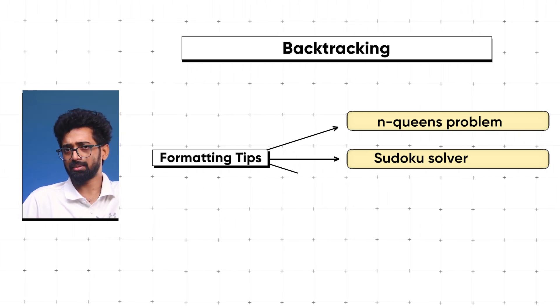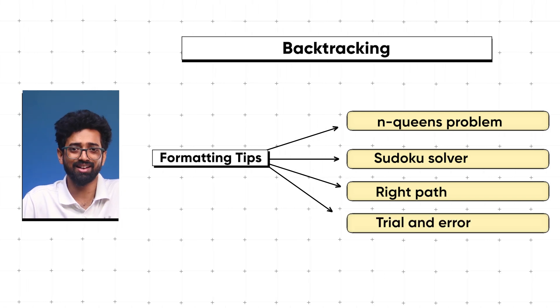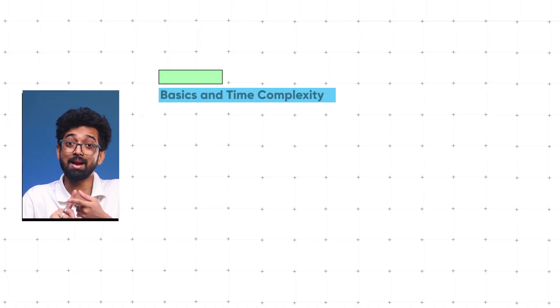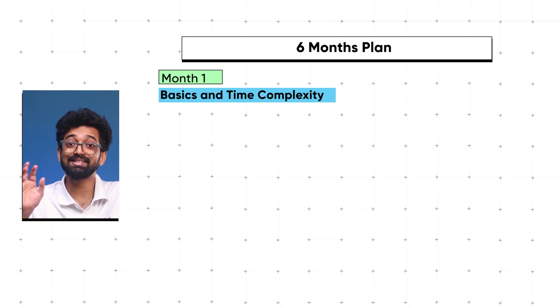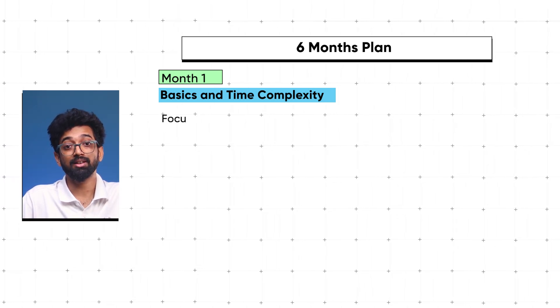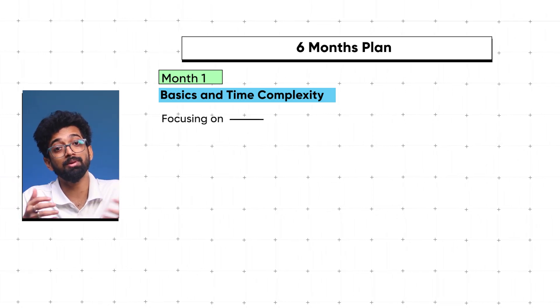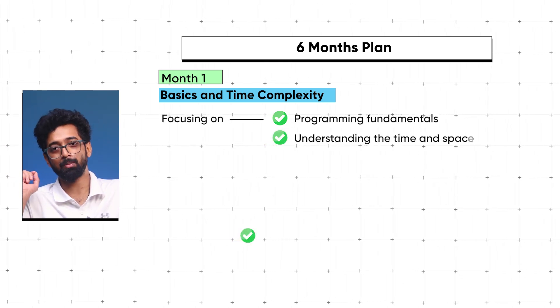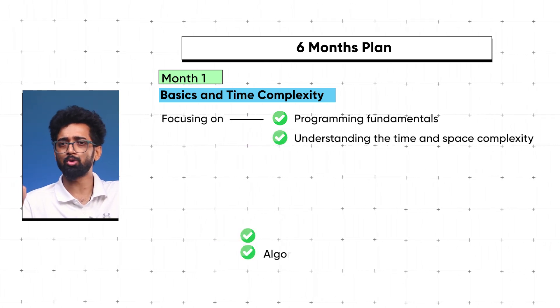Backtracking is about finding the right path through trial and error. You might be feeling overwhelmed, but you don't have to be — here's a six-month plan to keep you on track. In month one, focus on programming fundamentals and understanding time and space complexity: spend about two weeks on the basics and two weeks on complexity.